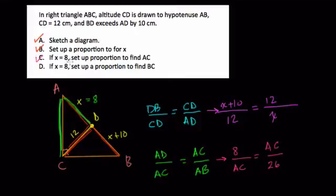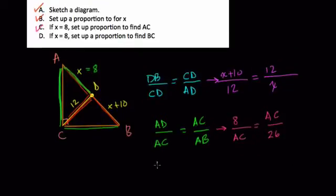If X equals 8 again, use a proportion to find BC. So where's BC? Here's BC right here. So we're trying to find BC. So that tells me what? Well, here, DB to BC, we can use that ratio. DB to BC equals what? Well, that's, DB is a leg to BC, the hypotenuse of this triangle here, DBC. Now we're thinking of BC as a leg for the next triangle to its corresponding hypotenuse AB over here.